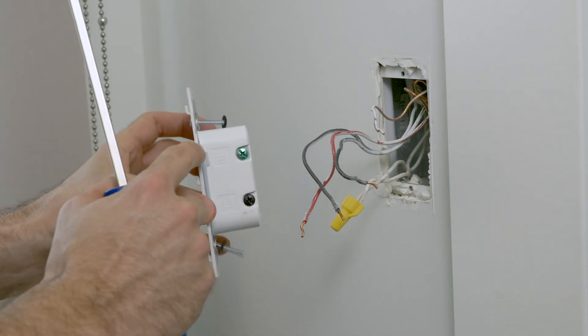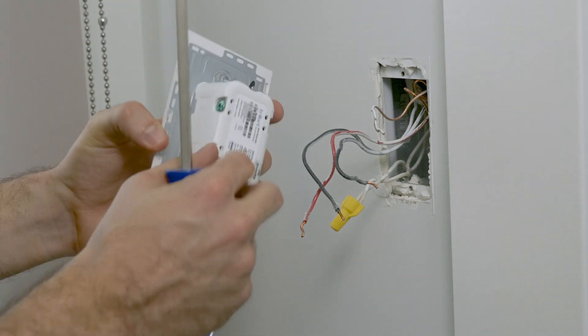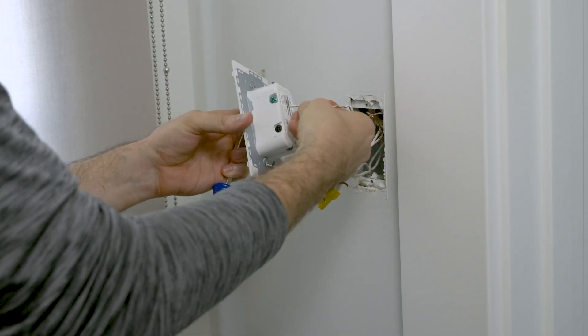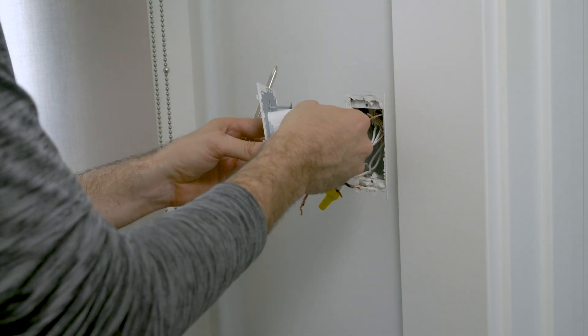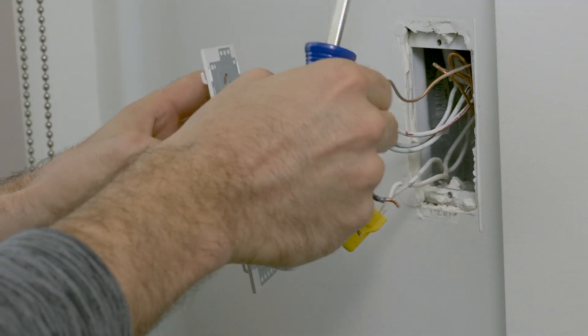We'll begin with the ground terminal, the green terminal here with the green screw. Find your ground wire. This is usually green or copper colored. Make sure to insert the wire and screw it until it's tight. Give it a good tug to be sure.